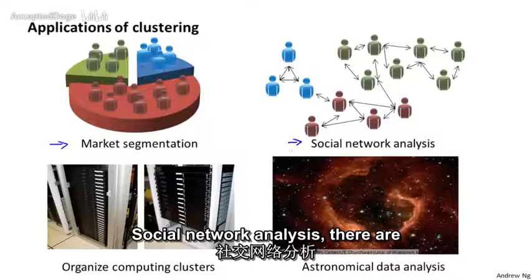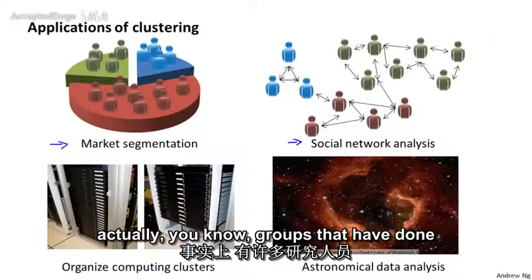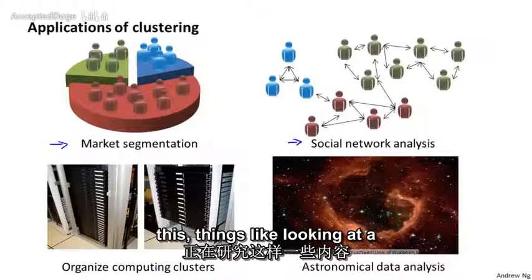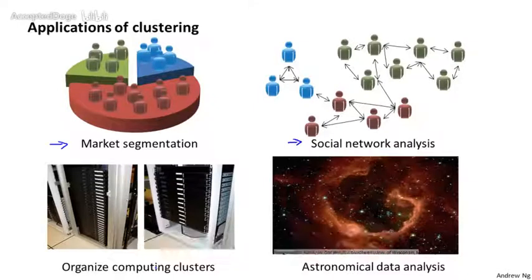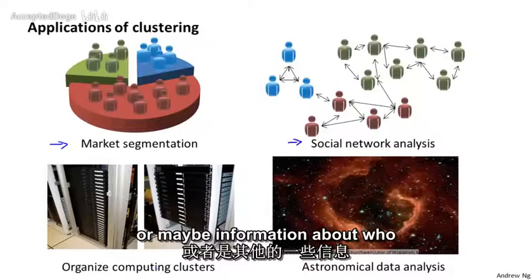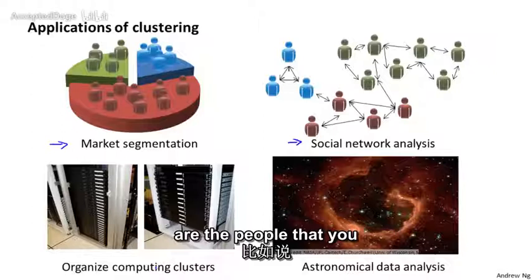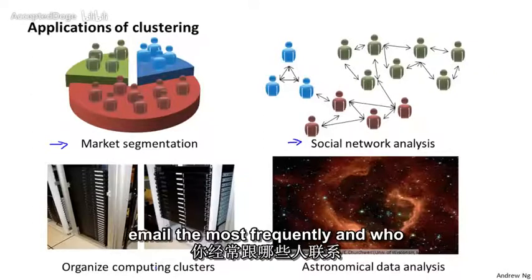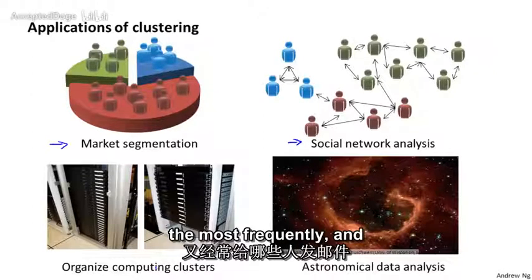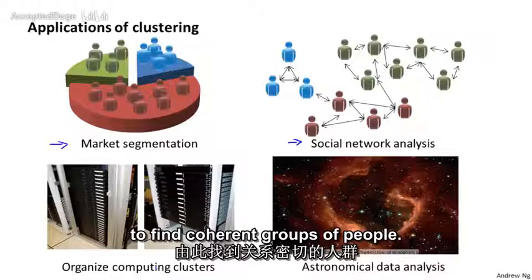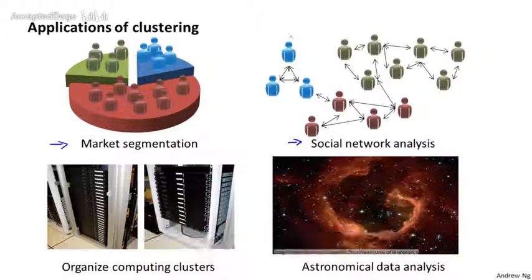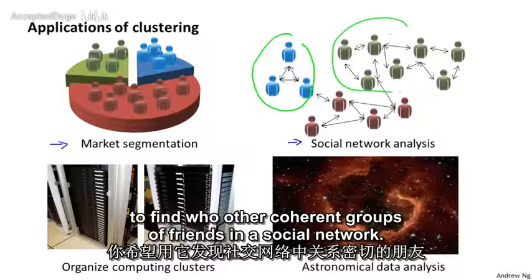Social network analysis, there are actually groups that have done this. Things like looking at a group of people's social networks. So things like Facebook, Google+, or maybe information about who are the people that you email the most frequently and who are the people that they email the most frequently. And to find coherent groups of people. So this would be another clustering algorithm where you want to find who are the coherent groups of friends in the social network.